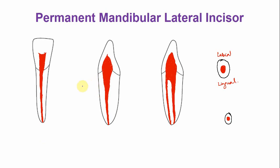Because of the deposition of tertiary dentine, the size of the pulp chamber is reduced. The pulp horns are obliterated and the size of the chamber and canal are markedly reduced, making it difficult with age to locate the canal in older adults.